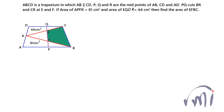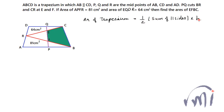How do we solve this problem? The area of a trapezium is equal to 1/2 times the sum of parallel sides multiplied by the height of the trapezium, and the area of a triangle is 1/2 times base multiplied by height.